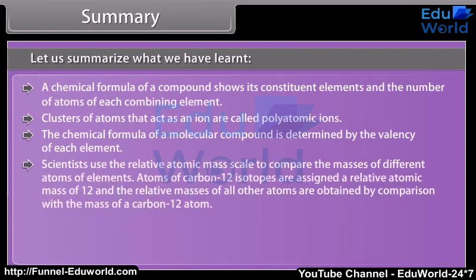Scientists use the relative atomic mass scale to compare the masses of different atoms of elements. Atoms of carbon-12 isotopes are assigned a relative atomic mass of 12, and the relative masses of all other atoms are obtained by comparison with the mass of a carbon-12 atom.